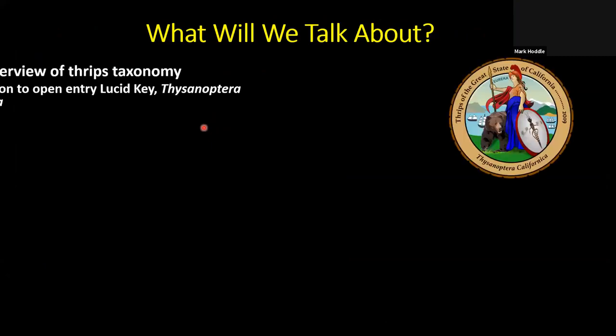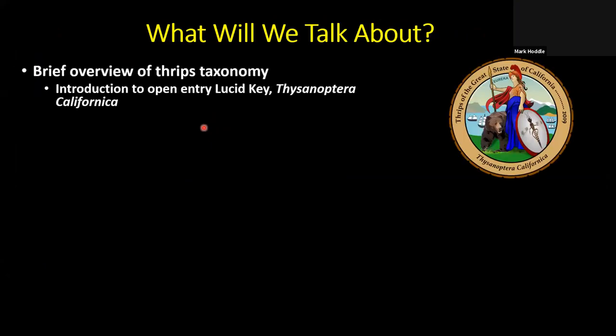Here are the things we're going to cover. I'll provide an overview of thrips taxonomy, which will give us an idea of the types of insects we are dealing with. I'll also introduce a lucid key called Thysanoptera californica, which identifies approximately 300 thrips in California, many of which you are not likely to encounter, but we also include a lot of pest species. You can find it by typing it into Google.